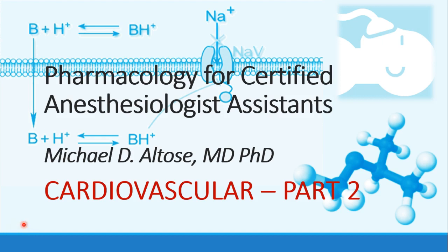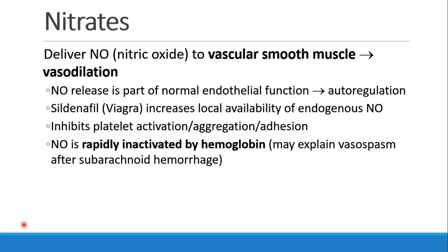Hi, this is Michael Altos. We're continuing our discussion of cardiovascular drugs, and this is recording part two. Now we're going to talk about vasodilators, and the first class of drugs are the nitrates. Nitrates are drugs that deliver nitric oxide to the vascular smooth muscle, which causes vasodilation. Nitric oxide is a normal part of regular endothelial function — it's how your body maintains autoregulation of vascular tone and blood pressure.